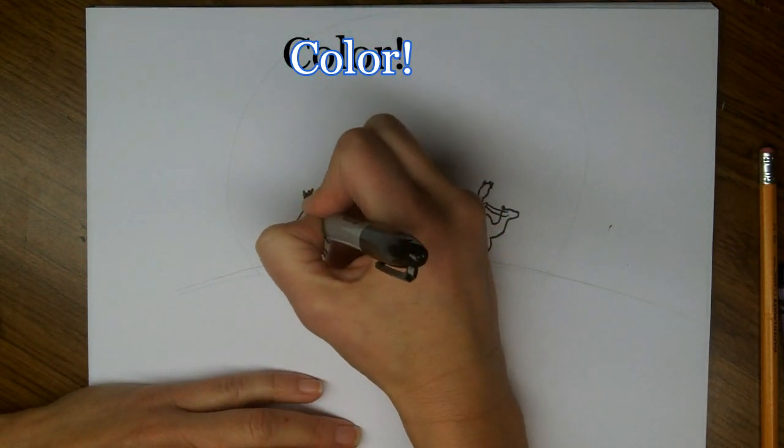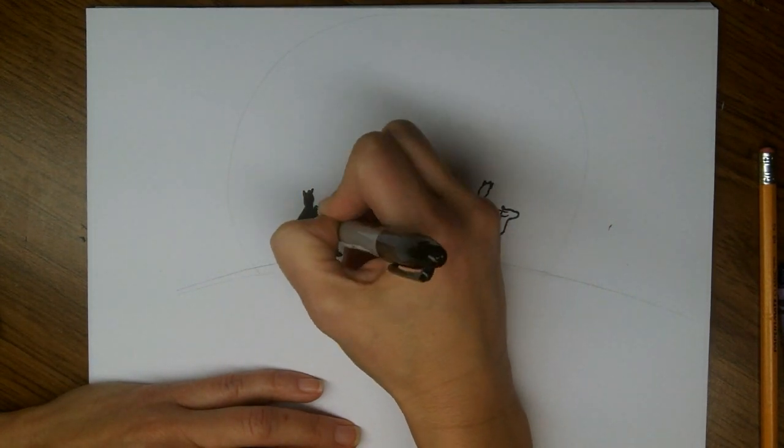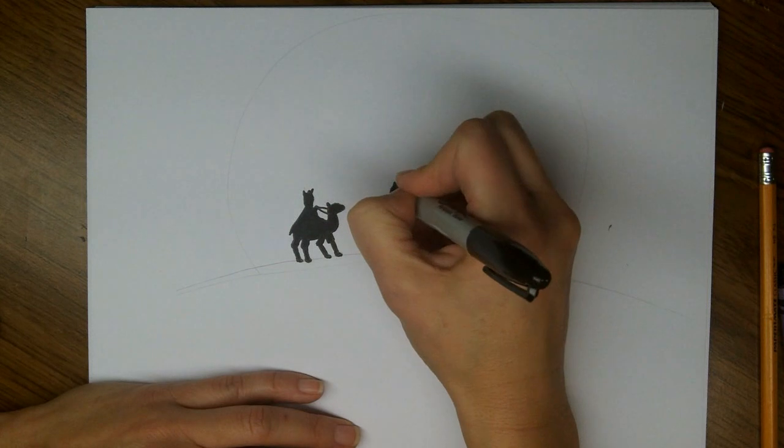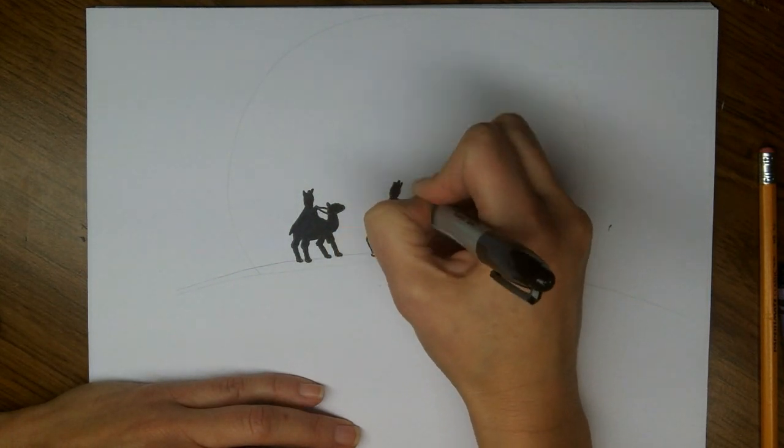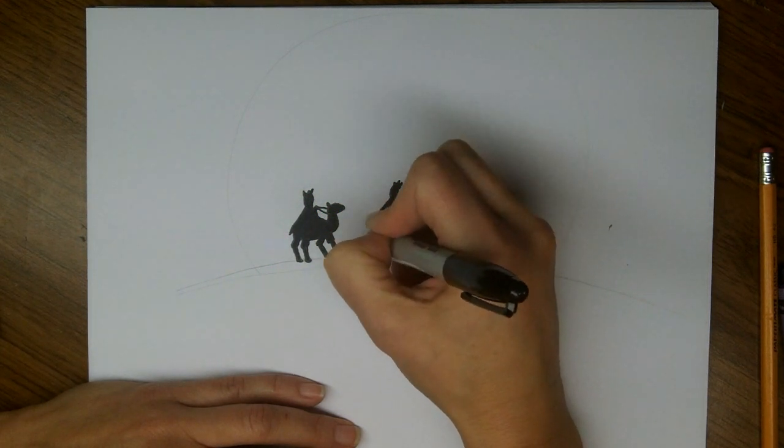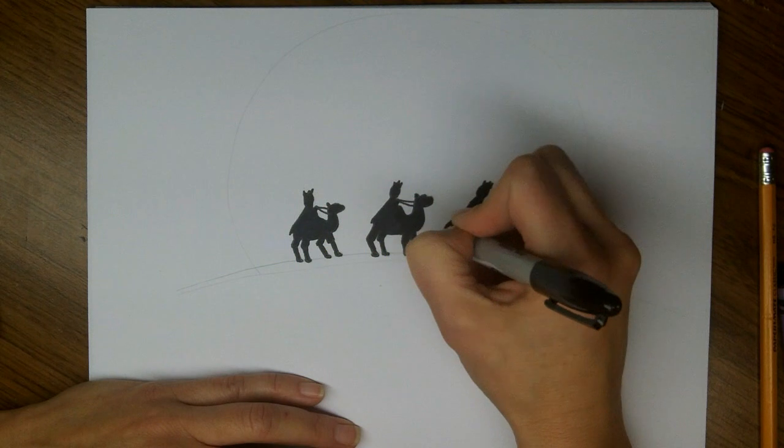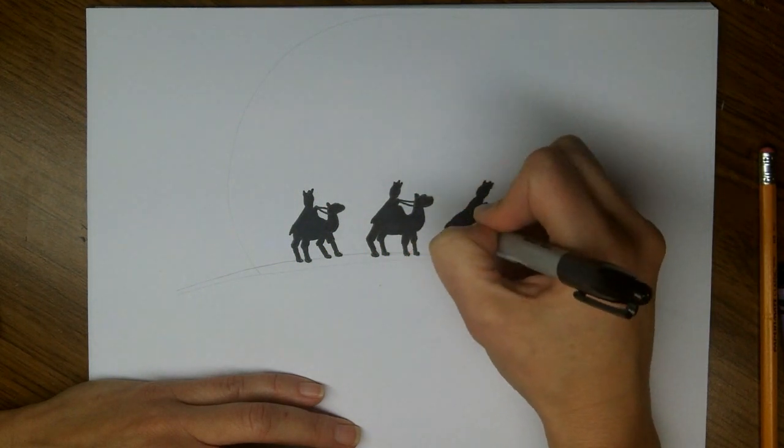And here we go. Just filling in neatly and carefully. I'm using fairly small strokes, gentle ones. I don't want it to bleed thickly through my paper. So I'm just trying to use a light pressure, enough to color, but not so much that it's going to soak through the paper.